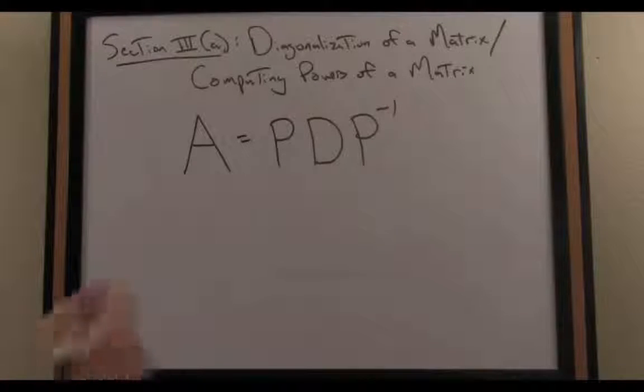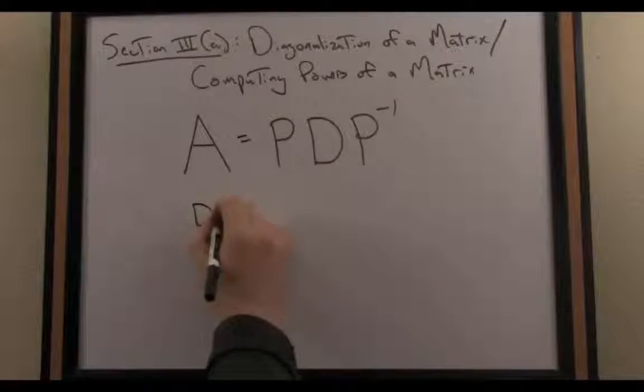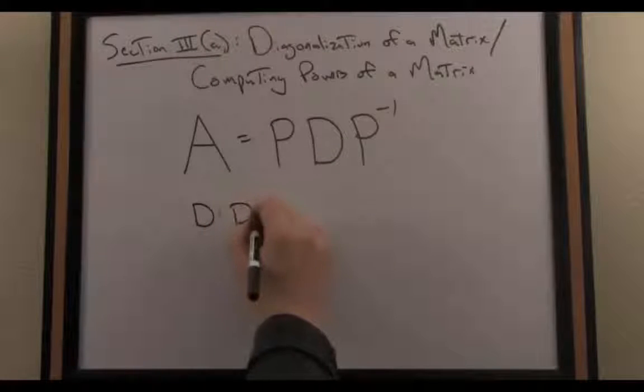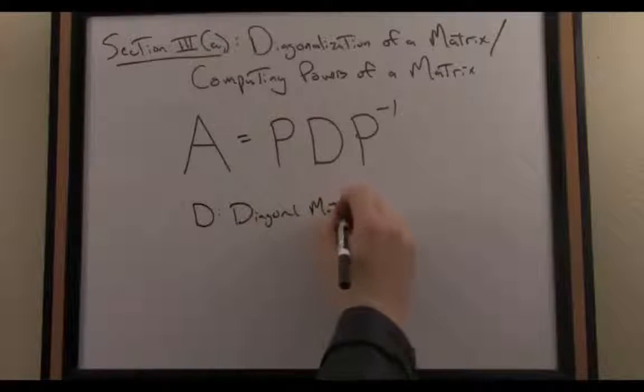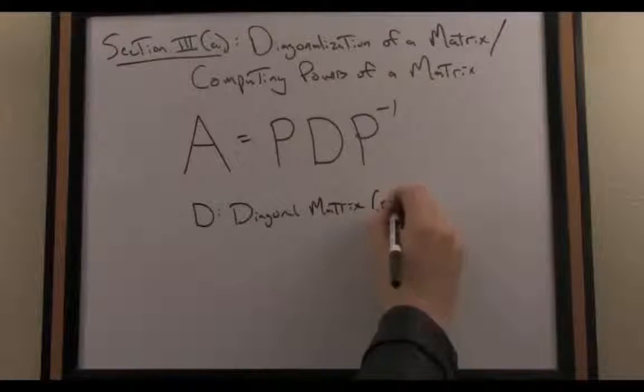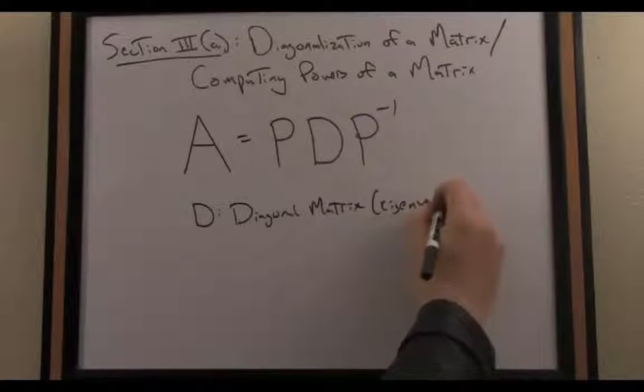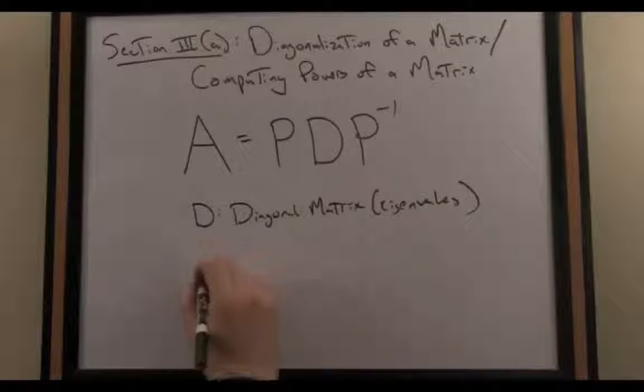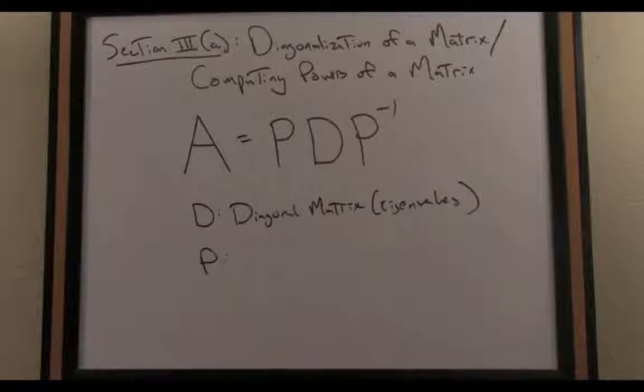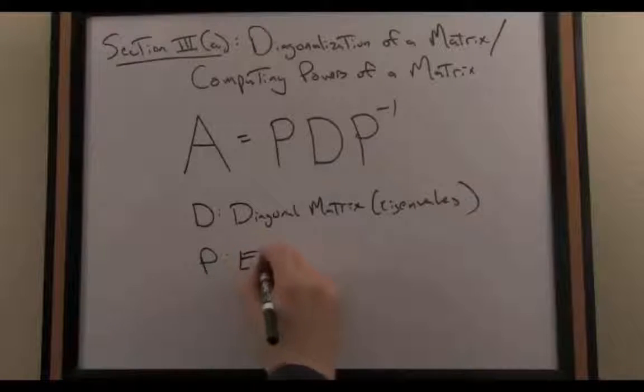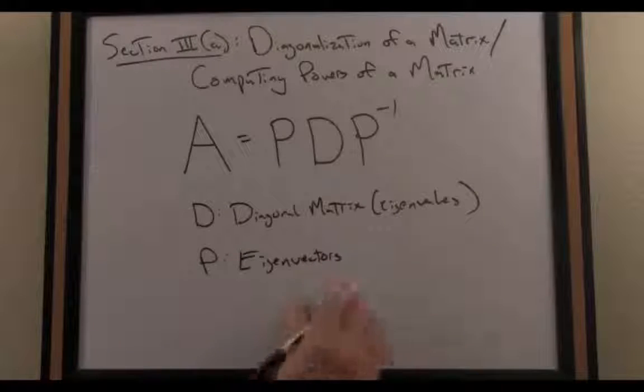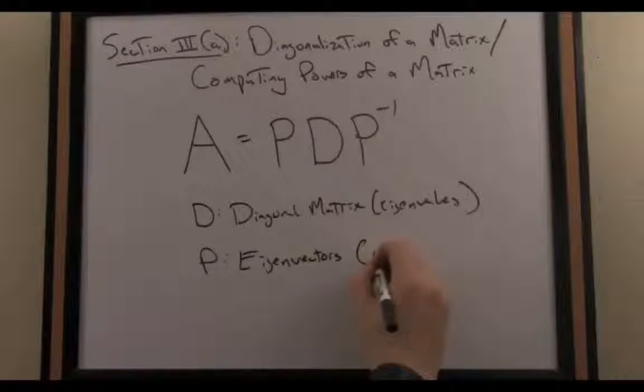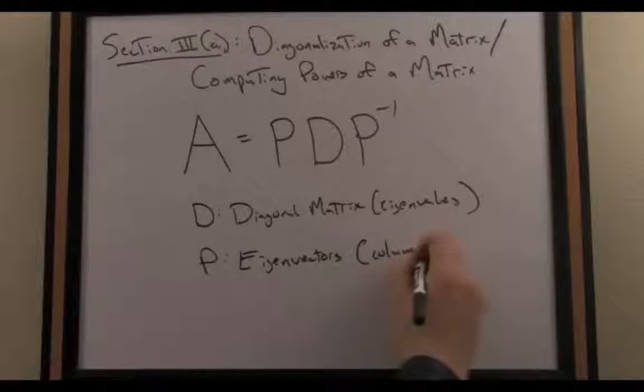P, D, and P inverse. Where specifically, D for diagonal is a diagonal matrix consisting of the eigenvalues of A. And P is the eigenvector matrix with respect to A. In other words, we write the eigenvectors of A to construct P in column form.